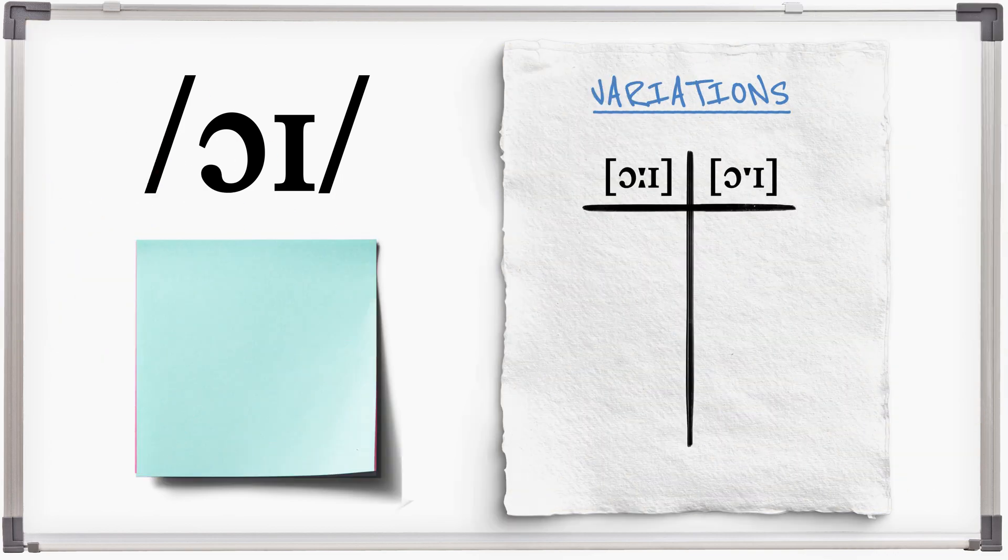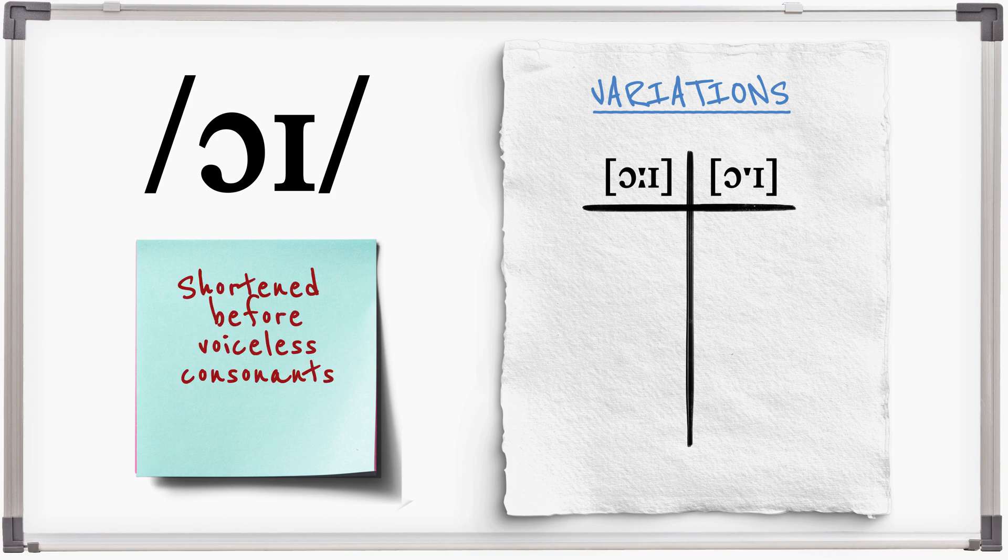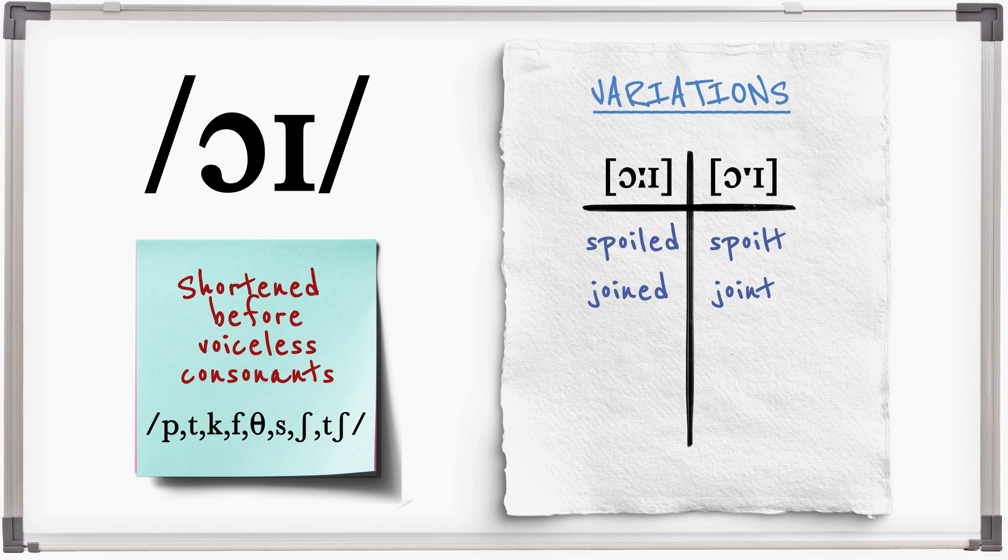OI is a long vowel sound so it is shortened before voiceless consonants: spoiled, spoilt, joined, joint, android, adroit.